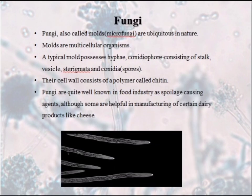So now let's start with a very basic question: what is a fungi? Fungi, also called molds, are ubiquitous in nature. Molds are multicellular organisms. A typical mold possesses hyphae, conidiophore which consists of stalk, vesicle, sterigmata, and conidia that are also called spores. Their cell wall consists of a polymer called chitin.